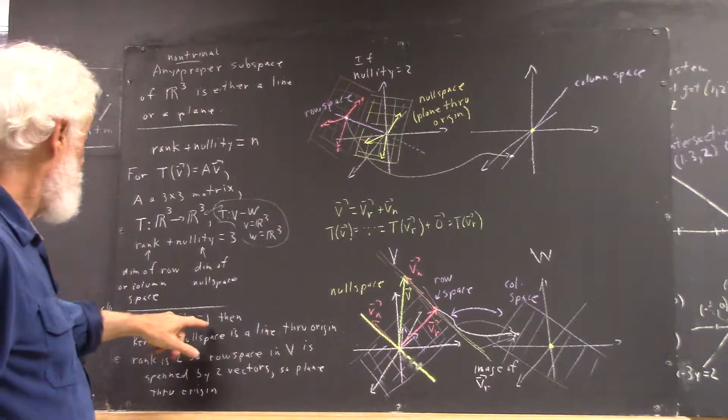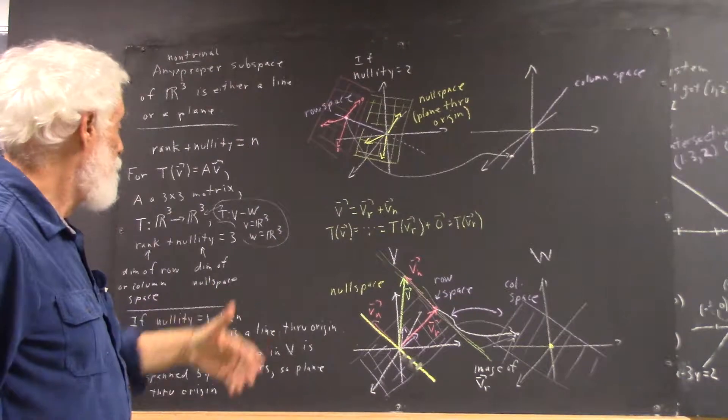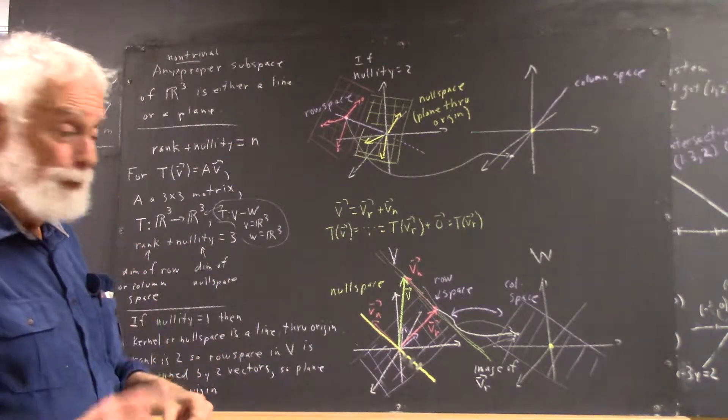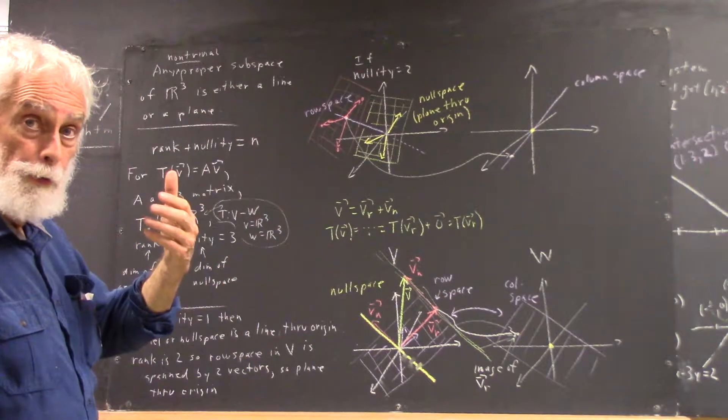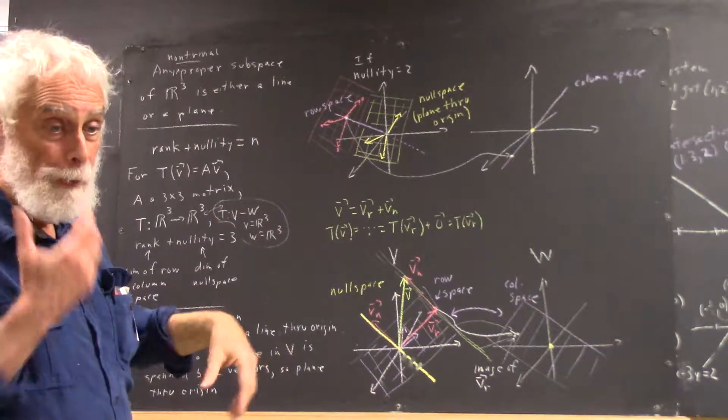If the nullity is 1, that means your kernel or null space has a basis consisting of one vector, making it a line through the origin, just as would be the case in R2.